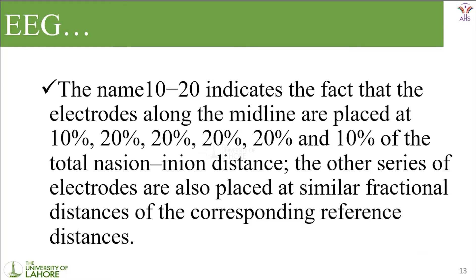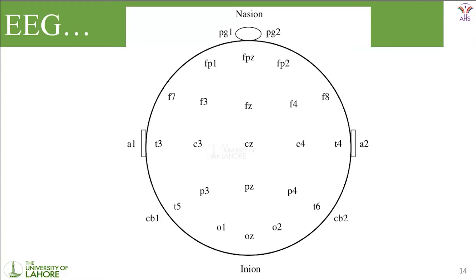The 10-20 system indicates that the electrodes along the midline are placed at 10%, 20%, 20%, 20%, and again 10% intervals from the nasion to inion distance. Starting from the nasion point going towards the inion point, 10% of electrodes are placed at the start, then 20%, 20%, 20%, and again 10% of electrodes are placed near the occipital region. At the nasion point there are three electrodes, then five, five, five, and then again three electrodes. This 10-20 ratio is how electrodes are distributed on a person's head.